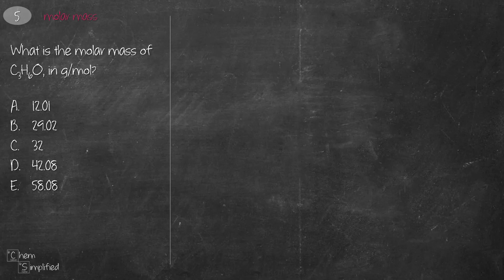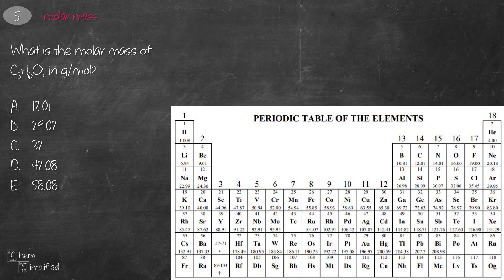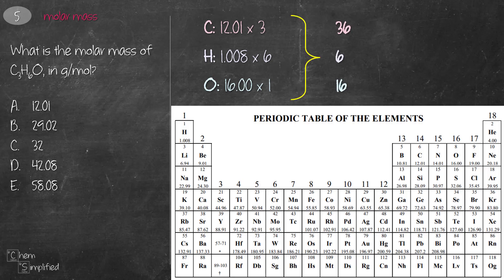This is a molar mass question for C3H6O. We use the periodic table to find the atomic masses: 12.01 times 3 for carbon, 1.008 times 6 for hydrogen, and 16 times 1 for oxygen. Simplifying gives approximately 36 + 6 + 16 = 58. The closest answer to the molar mass is E, 58.08.